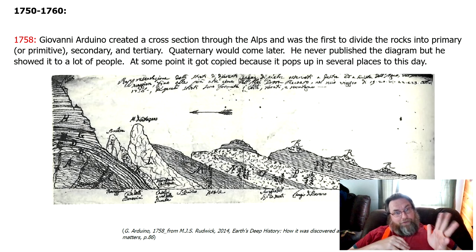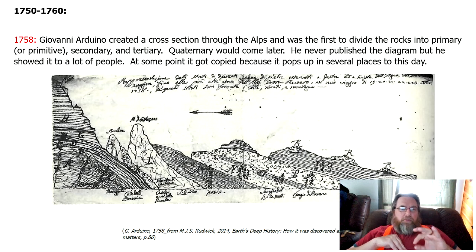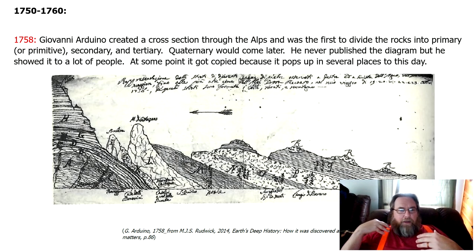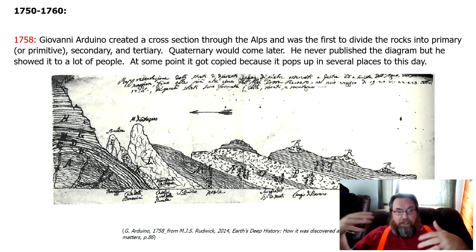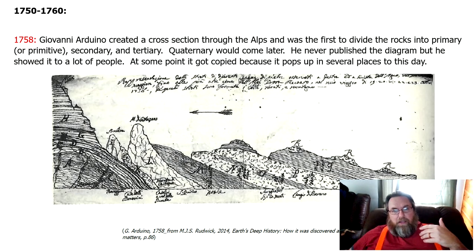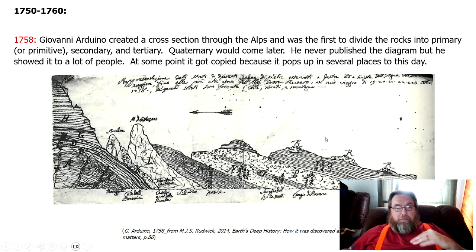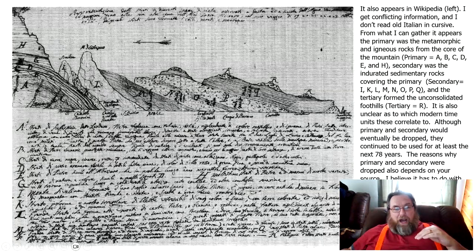Tertiary you may recognize because we still use it. Quaternary would come later. He never published the diagram but showed it to a lot of people, which was weird. This is one of those cases where he must have had numerous copies circulating, copied himself or by someone else several times, and you can tell that even this surviving one looks like an original copy.